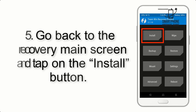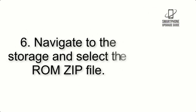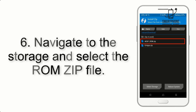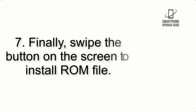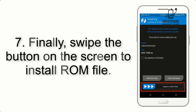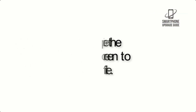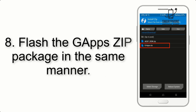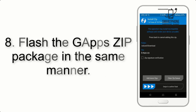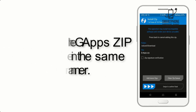Step 5: Go back to the recovery main screen and tap on the Install button. Step 6: Navigate to the storage and select the ROM zip file. Step 7: Swipe the button on the screen to install the ROM file.